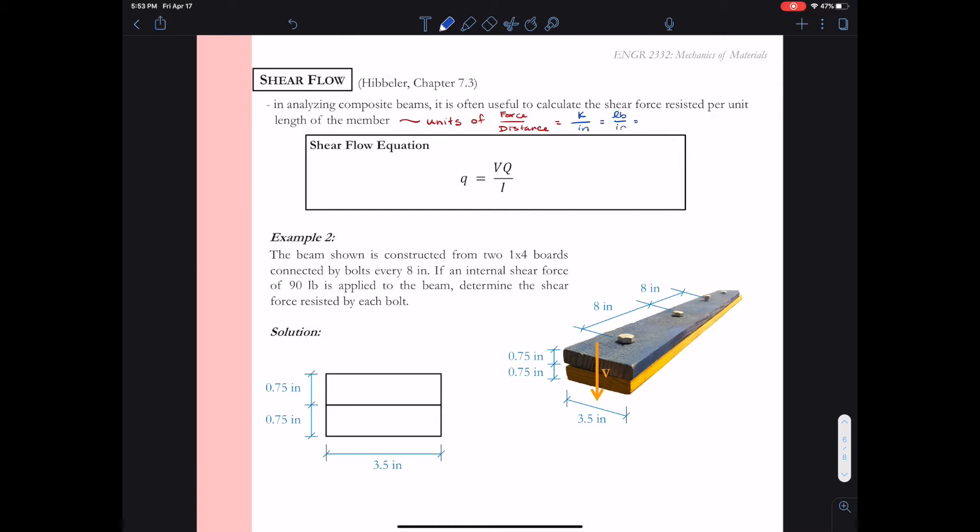We can look at the previous equation tau equals VQ over It, and if we want only force per distance instead of a stress, we can get to the same answer by not dividing by t. So we find little q, the shear flow, will be VQ over I.